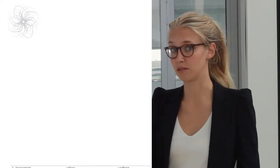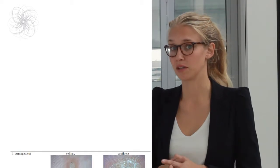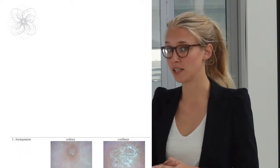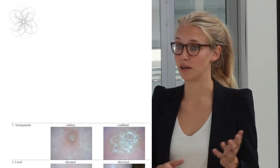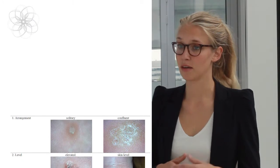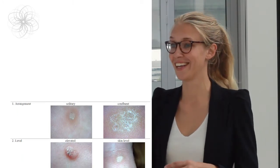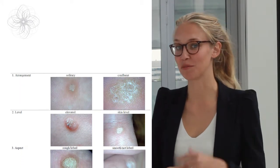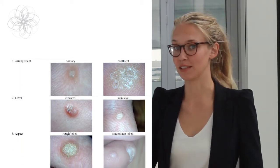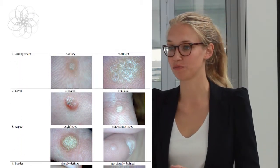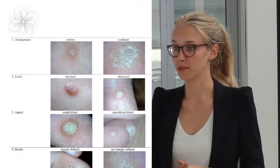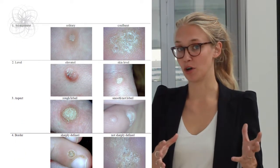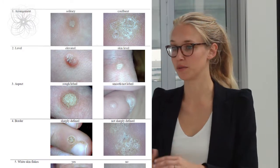Here you can see the photographs of the characteristics. Nine characteristics were all scored dichotomously. For arrangement, it could be either solitary or confluent. For level, it could be elevated or at skin level. For aspect, it could be rough and lobulated versus smooth and not lobulated.